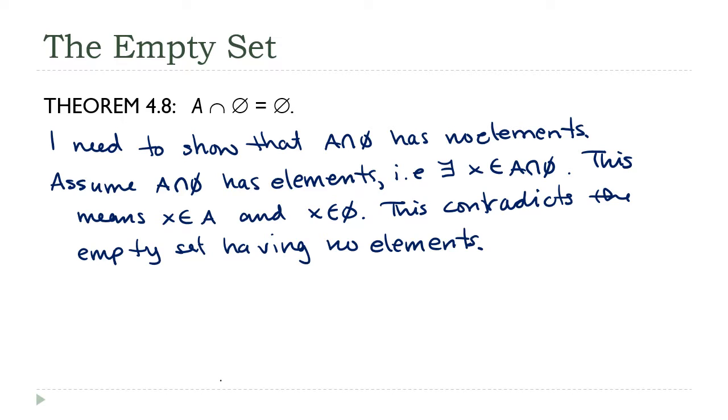Therefore, our original assumption must have been incorrect - that the intersection has elements. So therefore, we can conclude that A ∩ ∅ has no elements.